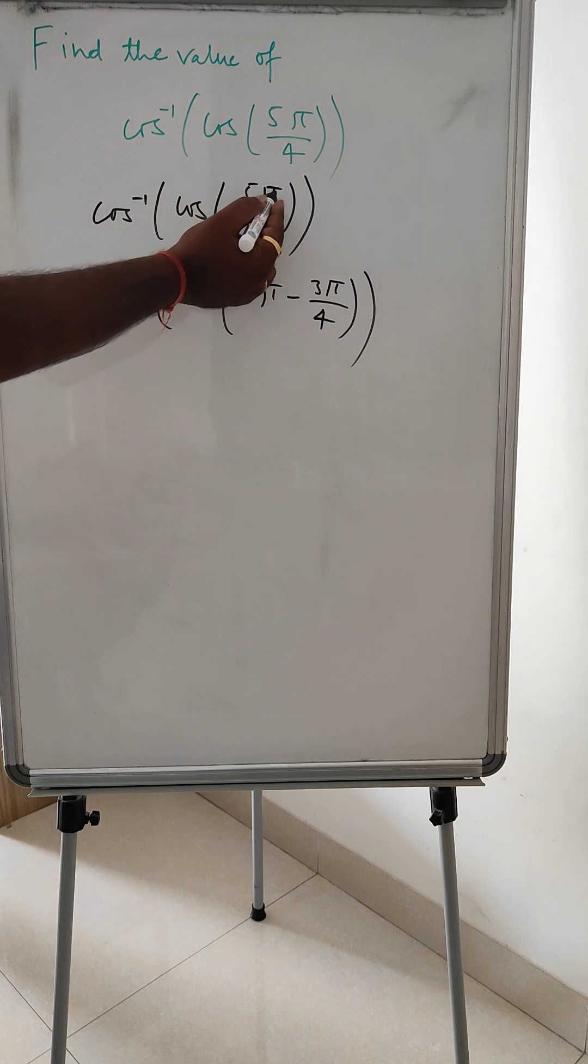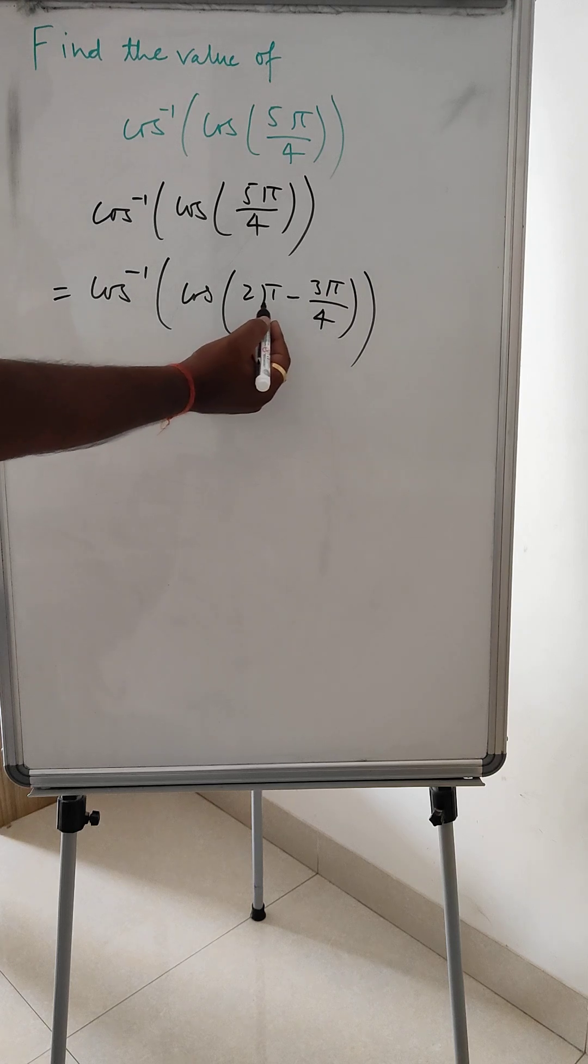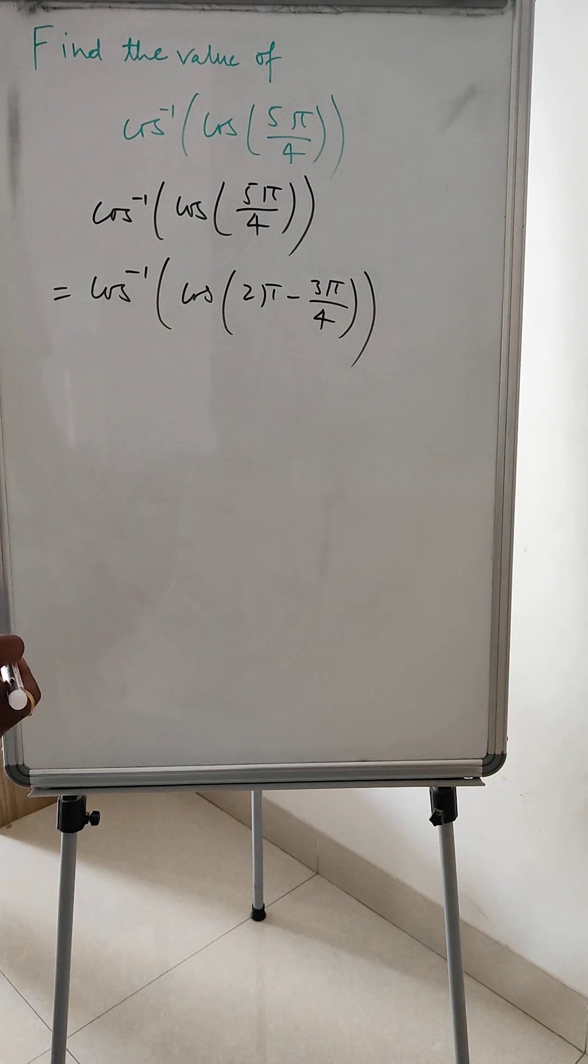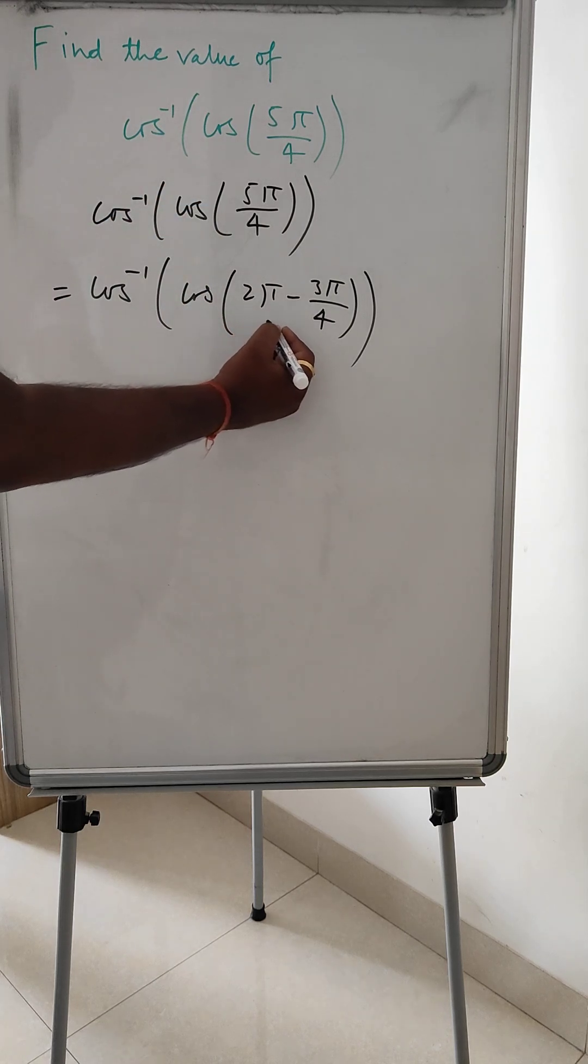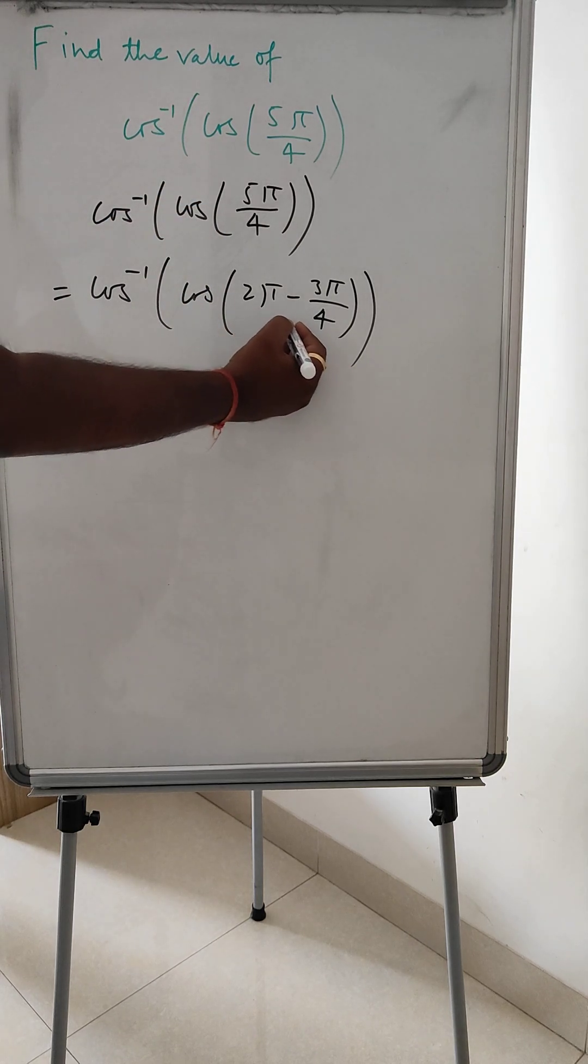5π/4 is 2π minus 3π/4. Now we should get to know under which quadrant these things lie.